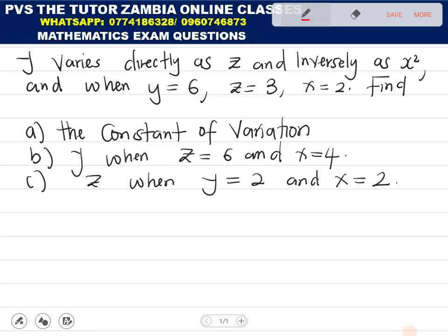Y varies directly as z and inversely as x squared. When y equals 6, z equals 3, and x equals 2. Find: a) the constant of variation, b) y when z equals 6 and x equals 4, c) z when y equals 2 and x equals 2.